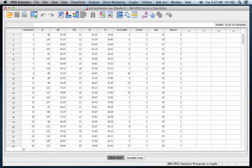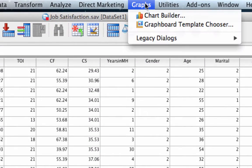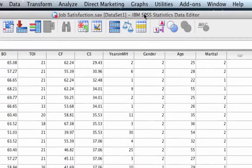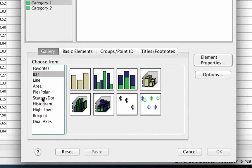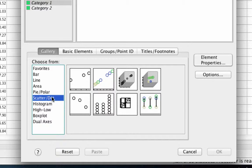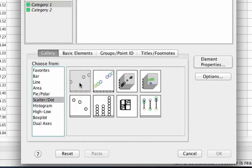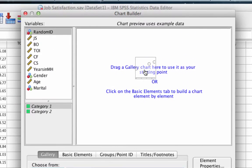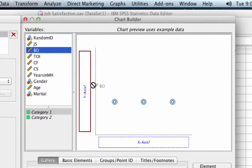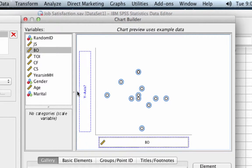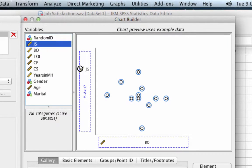The first thing that we are going to do is to create a scatter plot. We'll do that by going to Graphs, Chart Builder. In the Chart Builder, in the gallery, we're going to create a scatter dot. I'm going to drag that simple scatter plot up into the canvas. Remember we're using burnout to predict job satisfaction. So let's put burnout on the x-axis and job satisfaction on the y-axis.